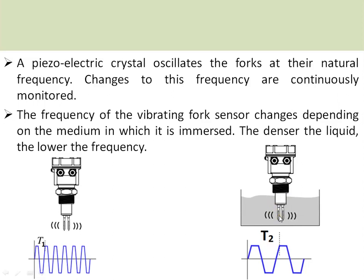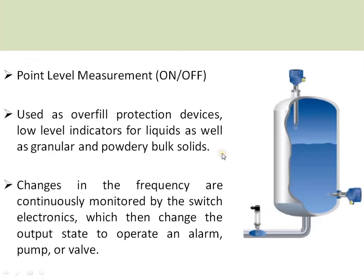This is used for point level measurement — that is, on or off. Whenever the medium comes into contact, to prevent overflow, the pumping mechanism into the tank can be switched off. Similarly, whenever low level is reached, to prevent dry run of the pump connected to the pipeline, it can be used for switching off that pump. It can also be used for generating alarms or for opening or closing valves in an automation process.